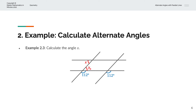X must equal Y. Because Y and 112 degrees lie on a straight line, we can solve for Y as 180 degrees minus 112 degrees, giving Y equals 68 degrees. And because X and Y are alternate angles, they must be identical, so X equals Y equals 68 degrees.